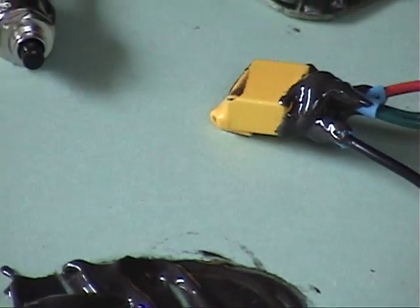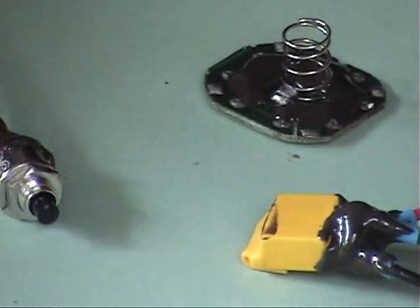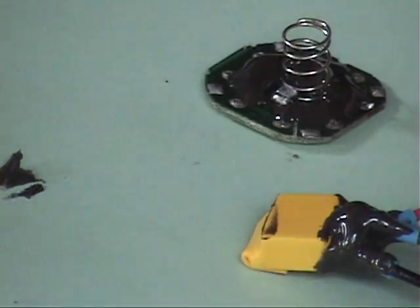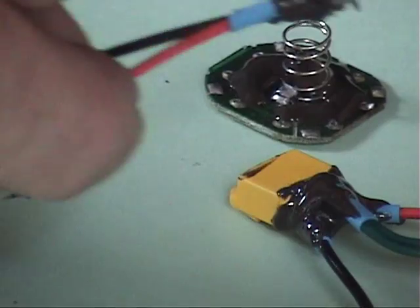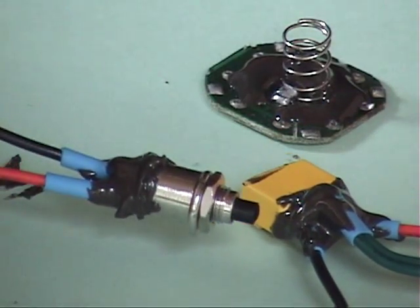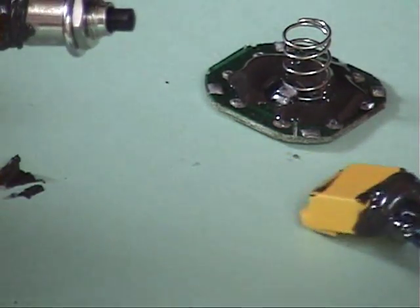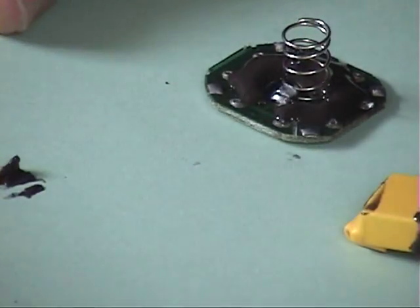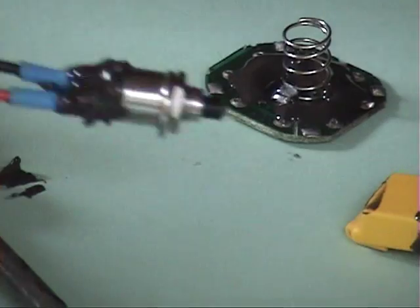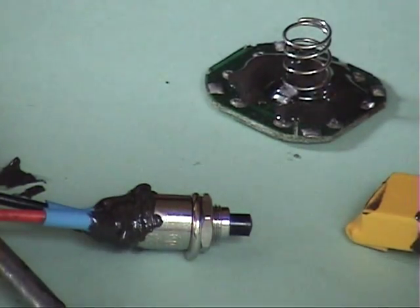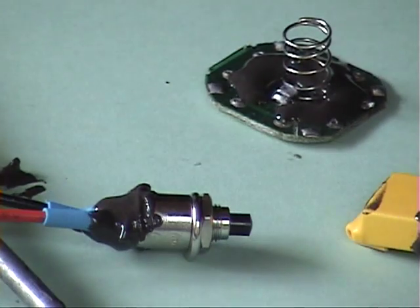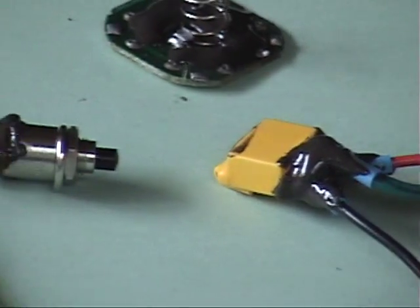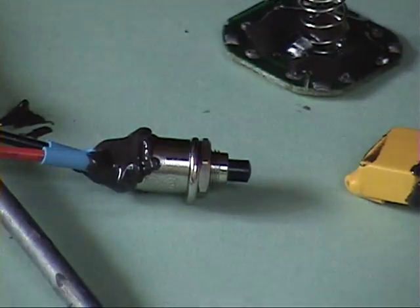So there's your three pieces covered in JB weld. See that: the switch, the circuit board, and the regulator. I'm going to let these dry and I'll be back in a little while.